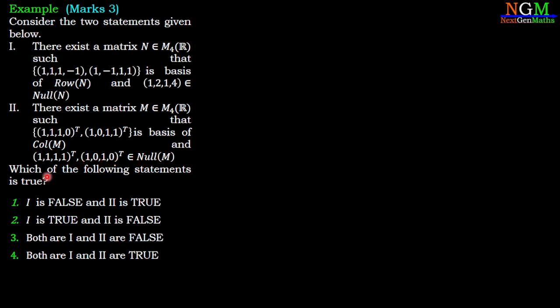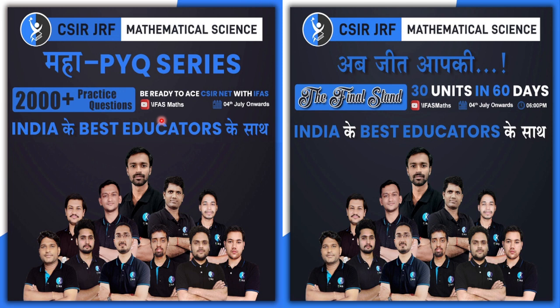Which of the following statements is true? Four options: (1) I is false and II is true, (2) I is true and II is false, (3) Both are false, (4) Both are true.